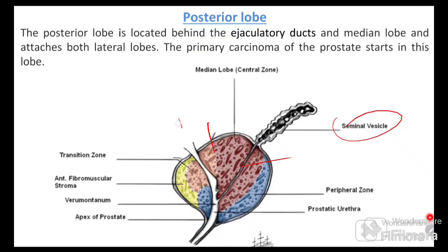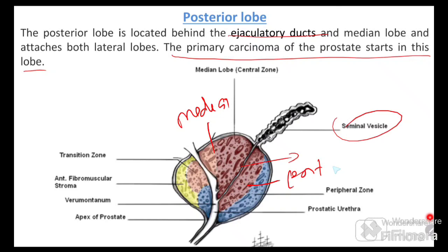The posterior lobe is present below and behind the ejaculatory duct. Very importantly, primary carcinoma of the prostate gland originates in the posterior lobe.